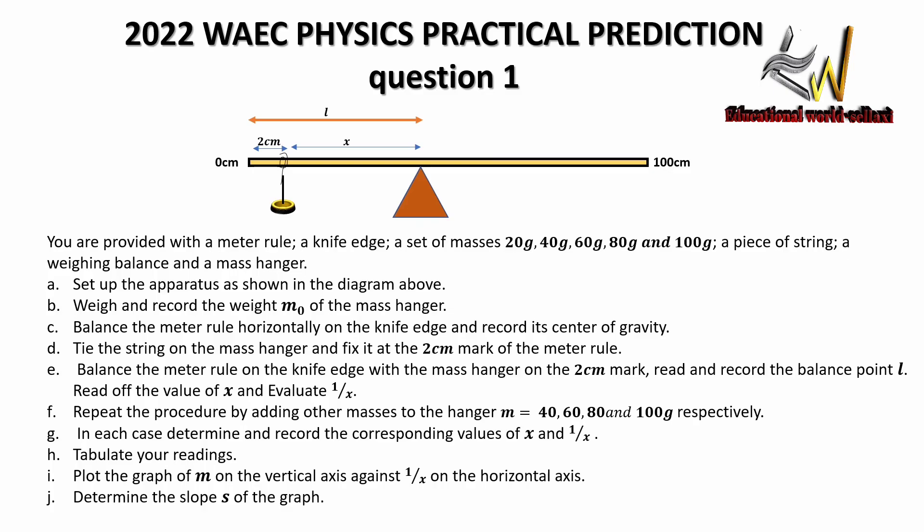Repeat the procedure by adding other masses to the hanger — 40g, 60g, 80g, and 100g respectively. In each case, determine and record the corresponding values of x and the inverse of x. Tabulate your readings and plot the graph of m on the vertical axis against the inverse of x on the horizontal axis, then determine the slope of the graph. This is my prediction.